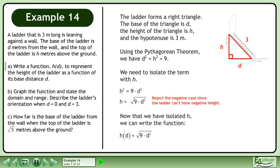Now that we have isolated h, we can write the function h equals the square root of 9 minus d squared.